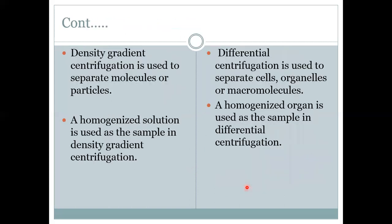Density gradient centrifugation is used to separate molecules or particles, while differential centrifugation is used to separate cells, organelles or macromolecules. In density gradient centrifugation a homogenized solution is used as the sample, while in differential centrifugation a homogenized organ is used as the sample.